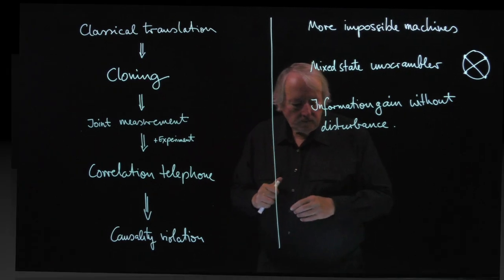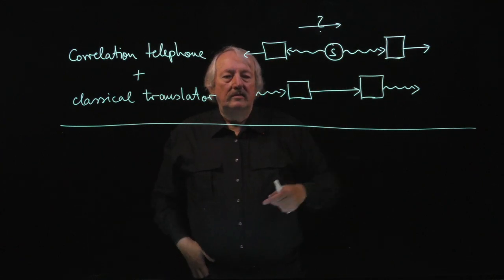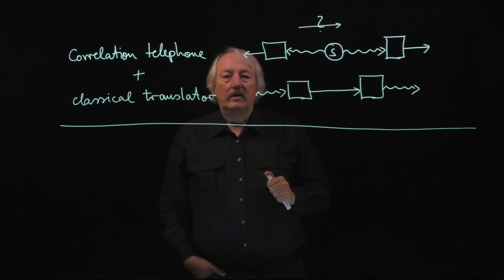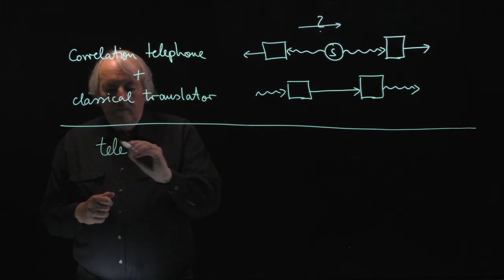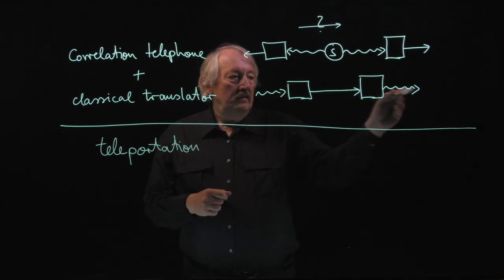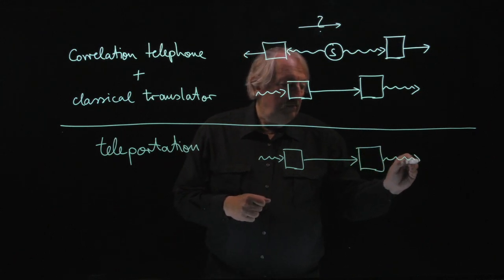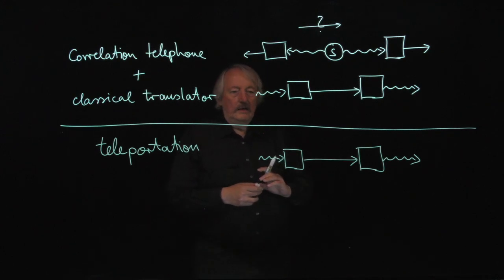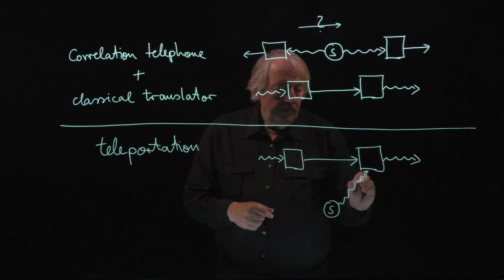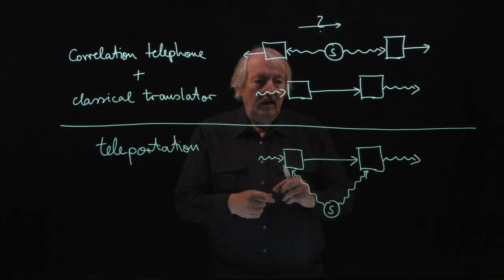I'll give you one example. This is about the combination of two impossible machines, which I drew for you. The correlation telephone is the idea of sending something just on correlations. The other thing is the classical translator, and we've seen at some length that this is impossible. So what do you get when you cross a correlation telephone with a classical translator? What you get is actually called teleportation. You want to do basically the task of the classical translator — send a quantum signal on a classical channel — but alone that is impossible. Combined with a source that produces entangled particles — that by itself is the other impossible machine — together, if you make these things just right, you get a perfect transmission channel.